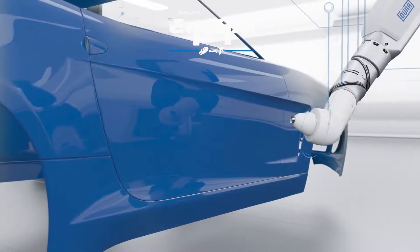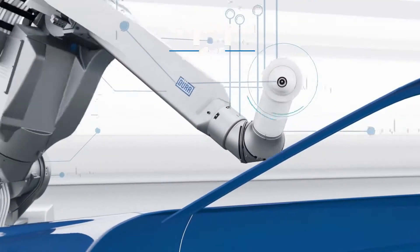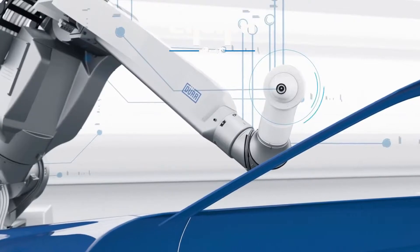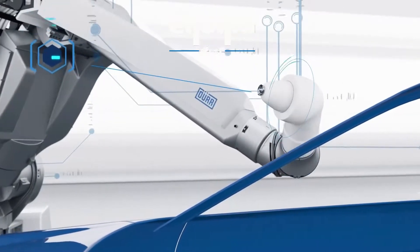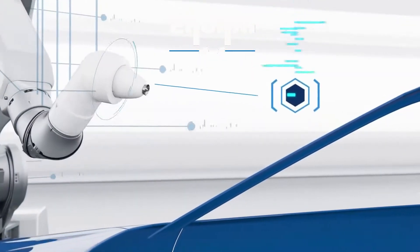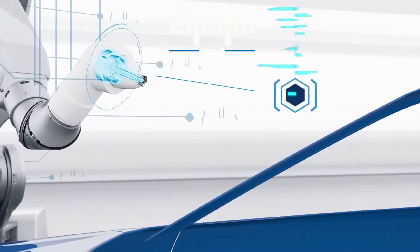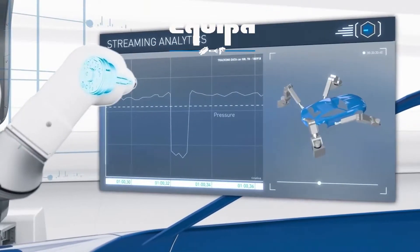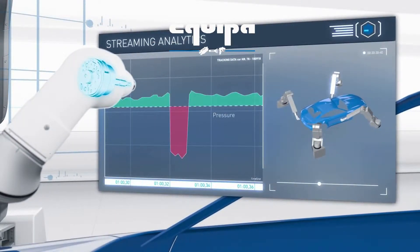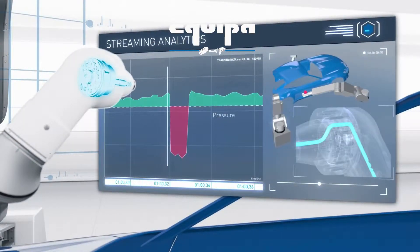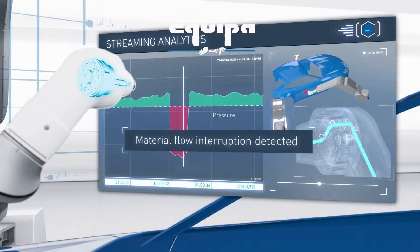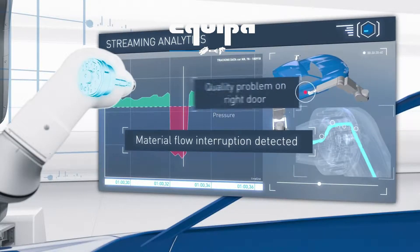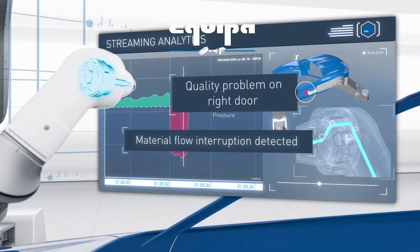Ongoing analysis of the data stream in real-time. Anomaly detected with streaming analytics. Material flow interruption detected — quality problem on right door.